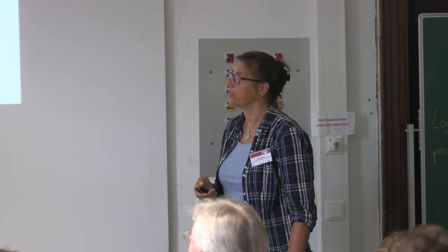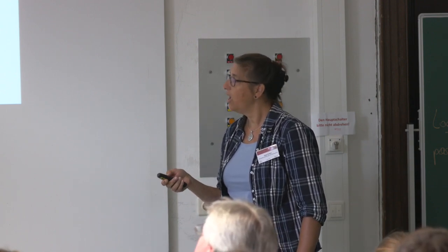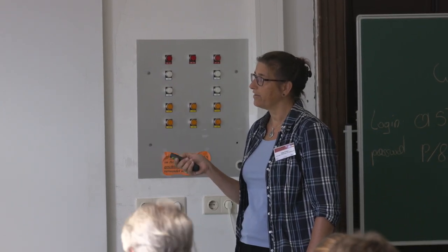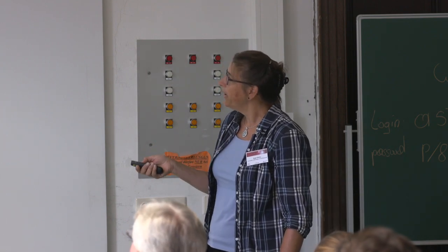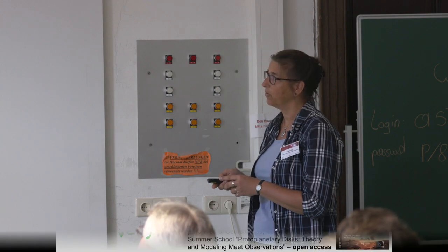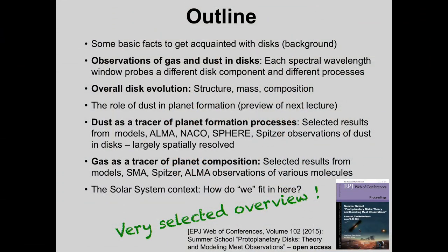I want to highlight selected results about dust as a trace of planet formation and recent observations about these processes, then use gas as a trace of planet composition. At the end I want to give you the solar system context — how we actually fit into all of this — since we are observing tens to even hundreds of these protoplanetary disks. If you want to learn more, we had a summer school on Ameland with open-access materials including equations.